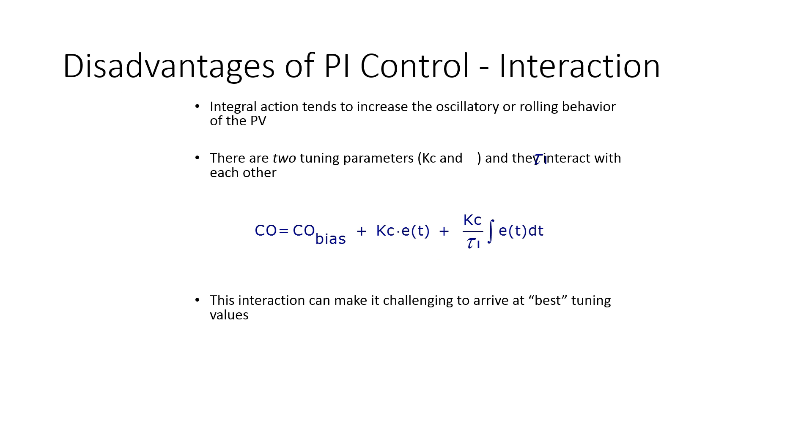Also the integral action tends to increase the oscillatory behavior because it could make it more aggressive. And the Kc and the tau I are going to interact with each other. As you increase Kc, you can see that this term will get larger. So it can be challenging at times to come up with the best tuning possible.